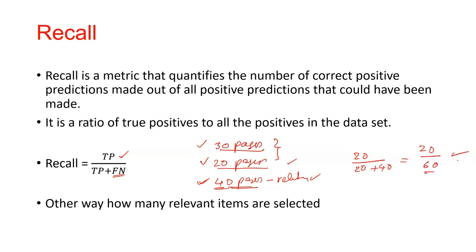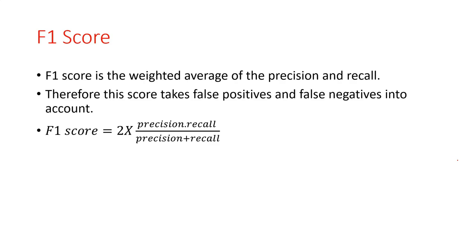That is the third classification evaluation metric. Now the fourth one is the F1 score. The F1 score maintains the balance between precision and recall for the classifier. It is the weighted average of precision and recall.